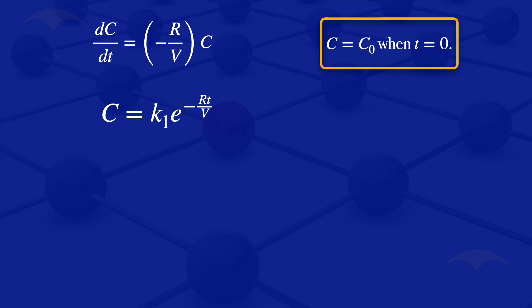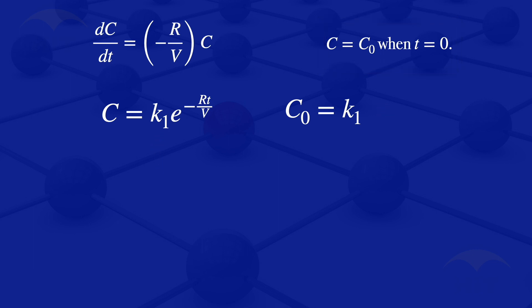We now apply the initial condition: when T is equal to 0, C is equal to C₀. Substituting T = 0 gives us the exponent of zero, which is 1, so the equation becomes C₀ equals K1. We have now solved for K1, finding that K1 is equal to C₀. Substituting back, our final solution is C is equal to C₀ multiplied by the exponent of minus RT divided by V. This is the solution to the first-order ODE given the initial condition.